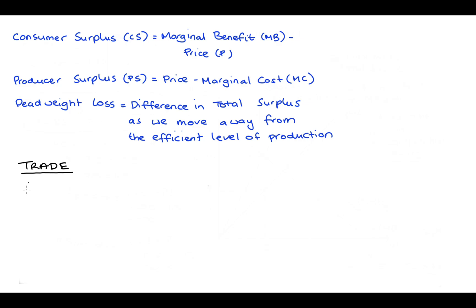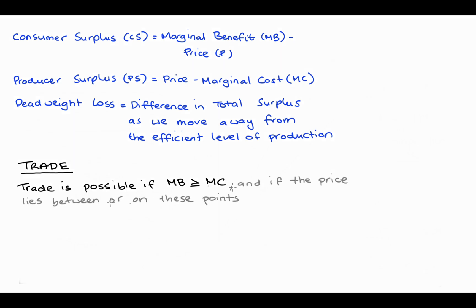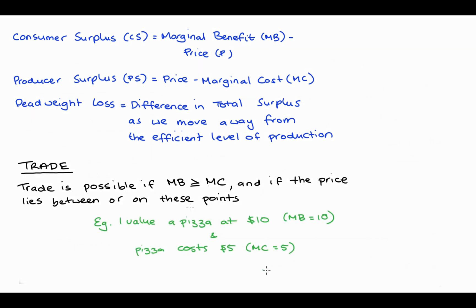Let's think about trade in the following way. Trade is possible if the marginal benefit of consumption — the benefit in monetary terms that the consumer gets from consumption — is greater than or equal to the marginal cost of production, and if the price lies between or on these points. So as an example, let's say I value a pizza at $10 — that's my marginal benefit of consumption — but it only costs the producer $5 to make. Then we can trade if the price lies between or on $5 and $10.